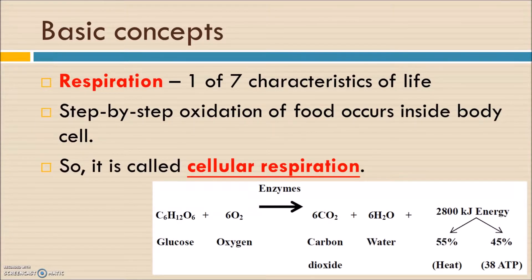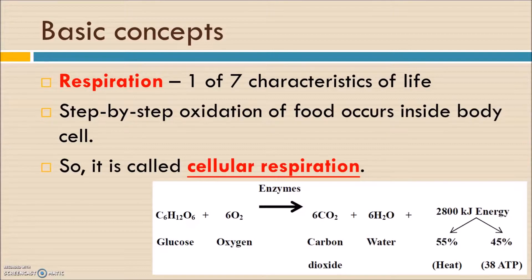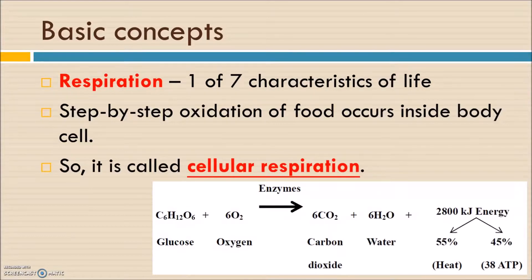Respiration is one of the seven characteristics of life — it's the biochemical reaction to break down food to release energy. In junior form, we learn respiration as aerobic respiration requiring oxygen. In senior form, we learn that oxygen is not a must, which is why we study anaerobic respiration. Since respiration only takes place in cells, it is called cellular respiration.